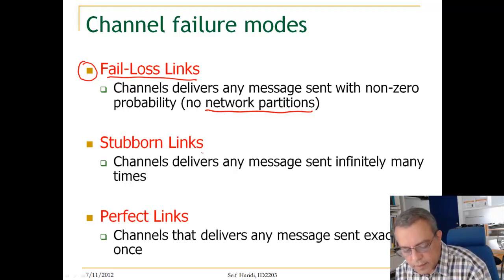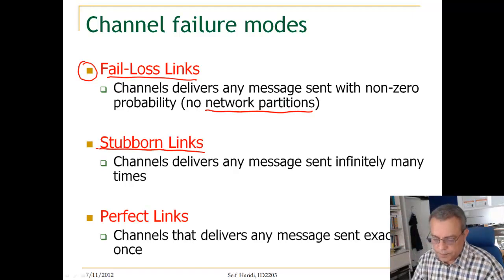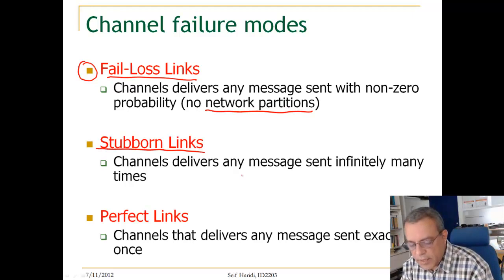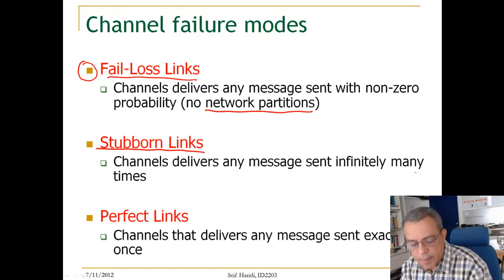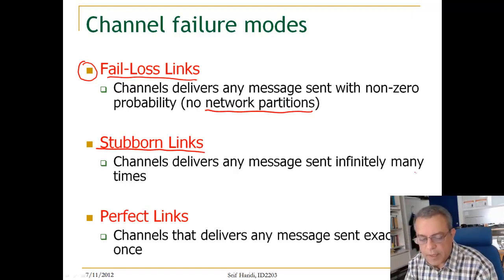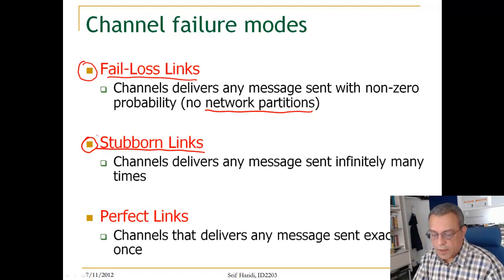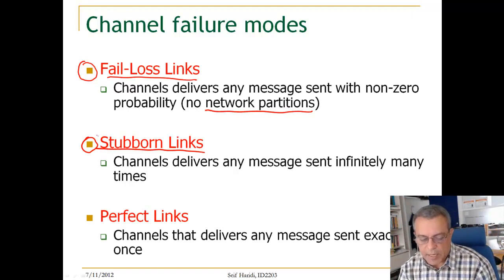The next type of channel we are going to talk about is stubborn links. A stubborn link is a channel that delivers any message sent infinitely many times. The stubborn link abstraction can be built on top of a fair loss link abstraction.